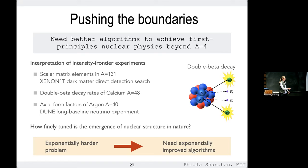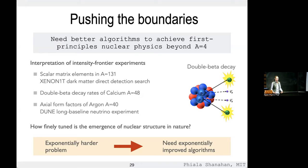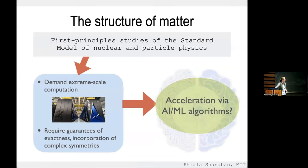Xenon has A=131, which is very large. The lightest nucleus undergoing double beta decay is calcium at A=48 — still much larger than 5. The DUNE neutrino physics experiment, looking to measure the neutrino mass hierarchy and mixing parameters, involves neutrino scattering from argon at A=40 — all well beyond current reach but needed for first-principles nuclear physics. With exponentially harder problems we'd really like exponentially improved algorithms.